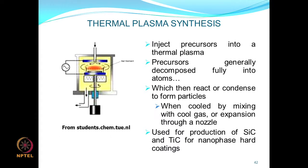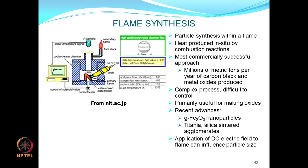Thermal plasma is similar to earlier methods except that the gas phase is a plasma. A plasma is more reactive because it carries a charge, enhancing reaction rates. Precursors are quickly decomposed into atoms due to the reactivity of the plasma, and then cooled or condensed to make particles. Silicon carbide, tungsten carbide, and titanium carbide can be made using this method.